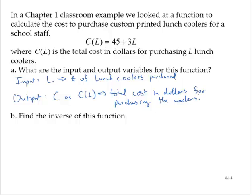Part B asks us to find the inverse of this function. To find an inverse of a function, it's a three-step process, actually four steps. First, drop the function notation. So I'll just write this as C = 45 + 3L. Notice that the equation is, in a sense, solved for C.